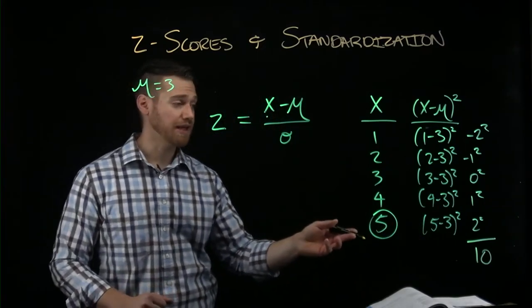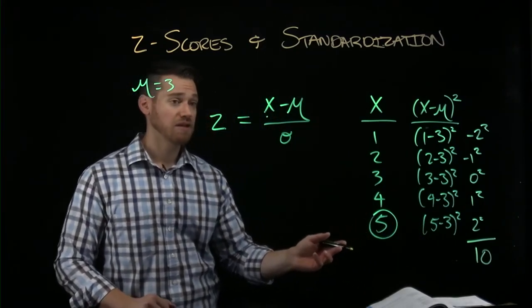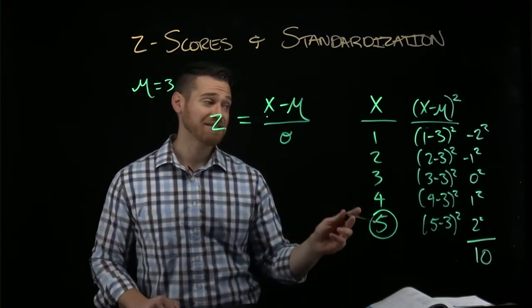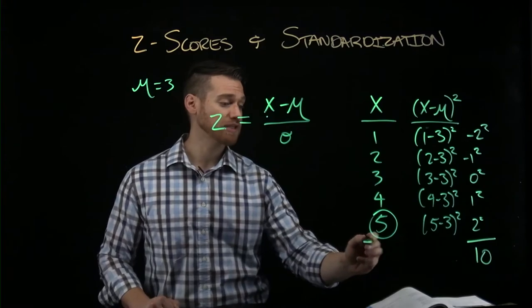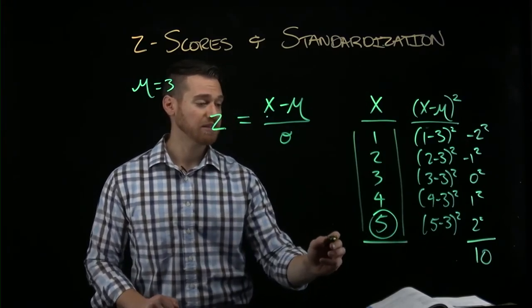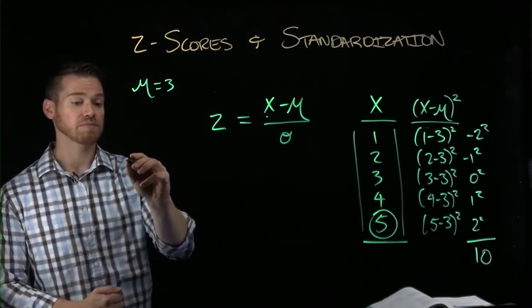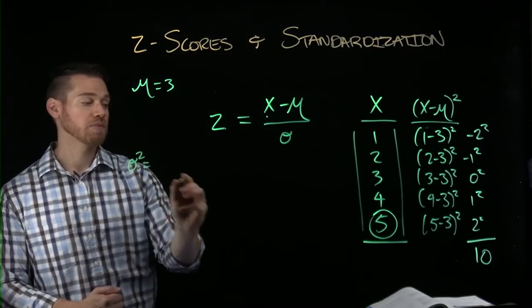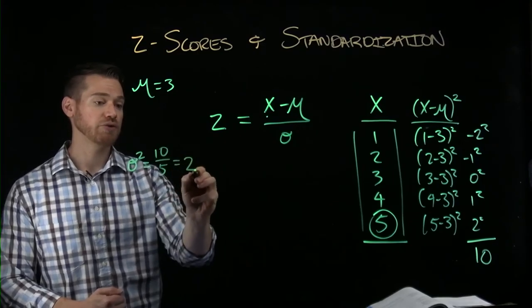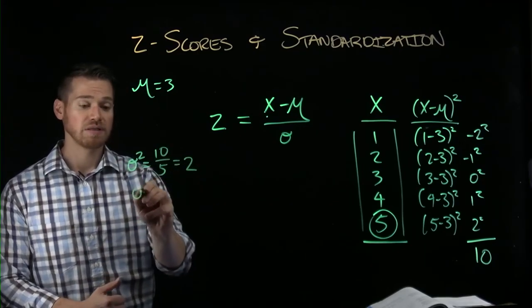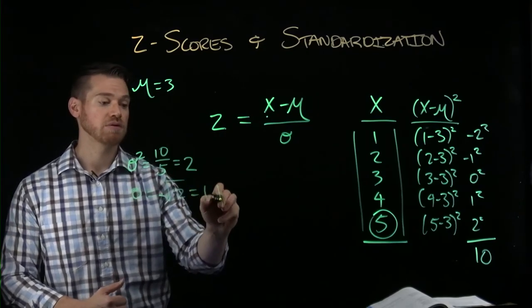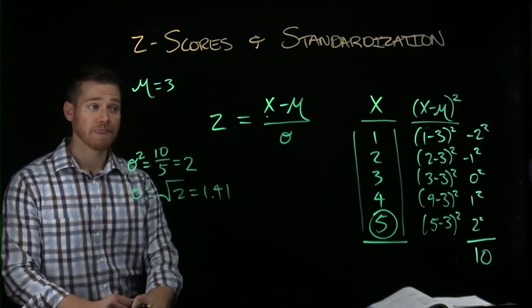So if the sum of squares is 10, the variance, if this is a population, the variance is going to be that divided by the sample size. Sample size is how many scores we had. We had 5. So variance is going to be 10 over 5 equals 2. And that makes square root 2 the standard deviation.